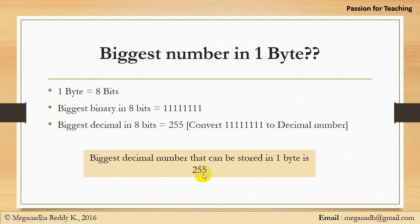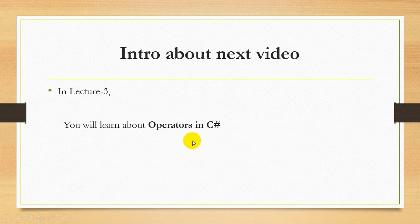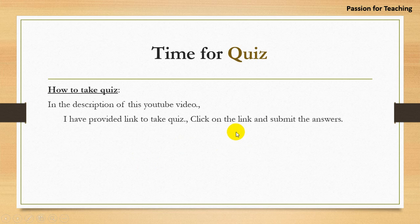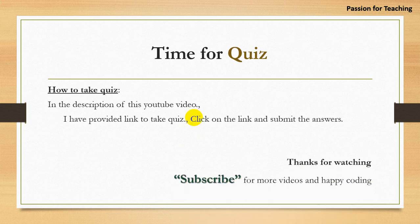To summarize: we learned about memory units, four types of number systems, and how to convert between binary and decimal. The biggest decimal number in one byte is 255. In the next video we'll learn about operators in C# programming — arithmetic, logical, and relational operators. Now it's time for a quiz: go to the YouTube video description's 'See More' section to find the quiz link. Thank you, keep learning and keep practicing!